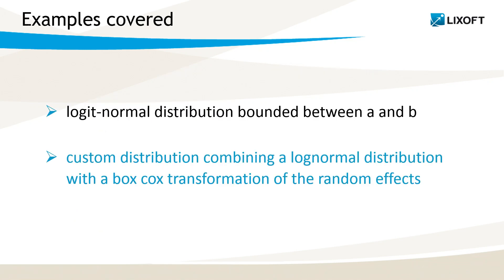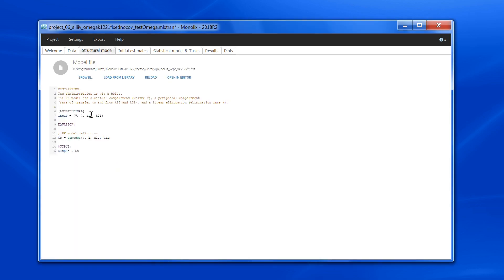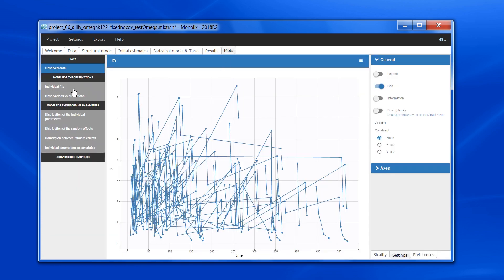Now let's focus on the second example. For this example, I have used the Tobramycin dataset from our online Tobramycin case study. The dataset has been fitted with a two-compartment model parametrized with micro constants. For all parameters, a log-normal distribution has been assumed.